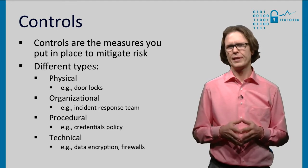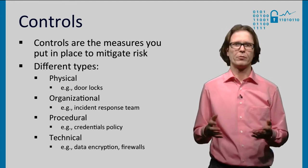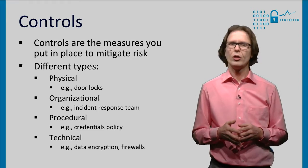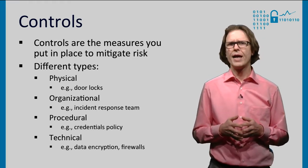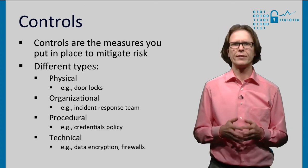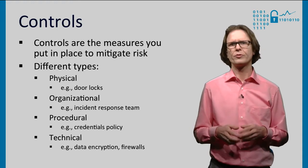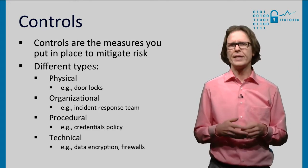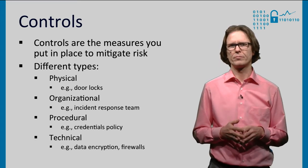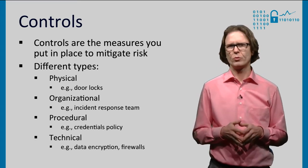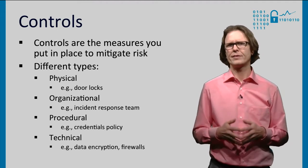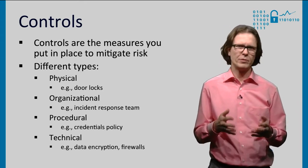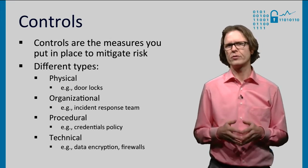Controls are the measures implemented to mitigate risk. Controls can be physical — for example, building security. They can be organizational, for example having an incident response team. They can be procedural, like a credential management policy. And they can also be technical, such as using data encryption and firewalls. Metrics based on controls typically check the existing controls against some framework of supposedly required controls — it might say that 8 out of 10 controls are in place. They also try to rate the maturity of the control: how developed and extensive it is. Do you have one person doing incident response, or a whole team? If you have a team, is it just handling incidents, or has it been trained to uncover incidents by itself?